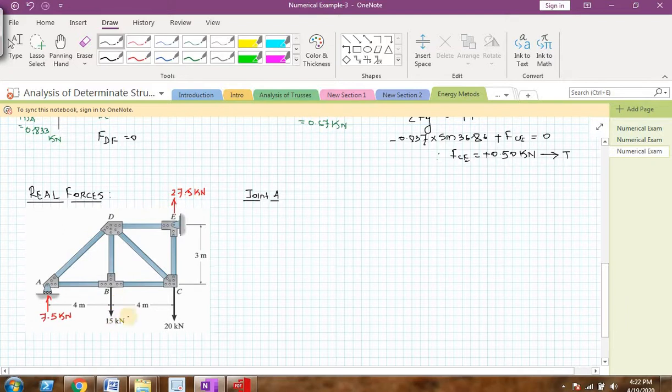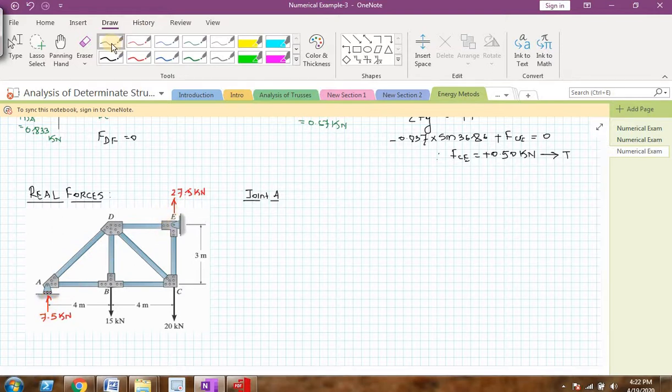That is why I am calling real forces and I am trying to find the reaction at A and E, vertical reaction. I am finding it as 7.5 and 27.5 kN. You can get it easily using equilibrium equations.